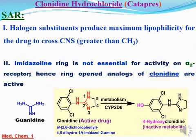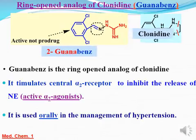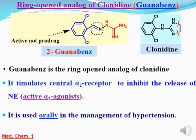نيجي نشوف الـ ring-opened analog من الـ clonidine اللي بنقول عليه active ده. Drug اسمه guanabenz. Guanabenz - عشان عندي guanidine فتح الـ imidazoline وشالها خالص وحط الجزء المهم اللي هو الـ guanidine. وطبعا الـ 2,6-dichloro phenyl ده لأن ده الجزء اللي بيدين اللي بيخلي الـ drug يعدي الـ CNS.